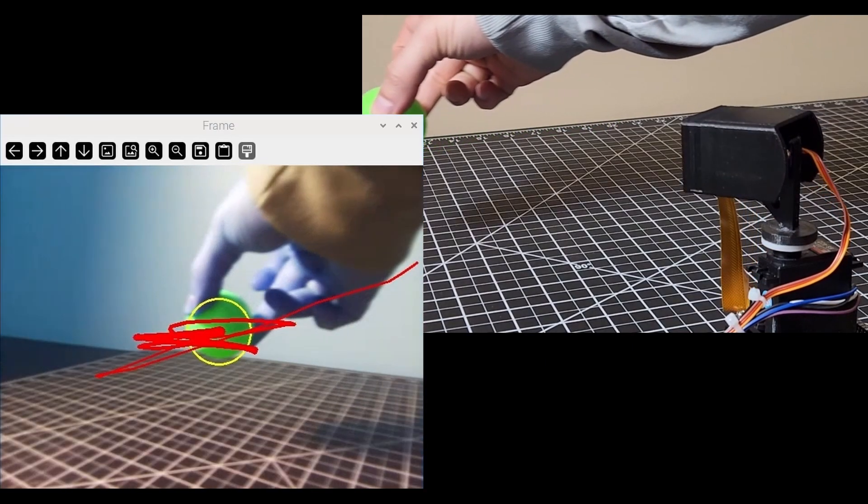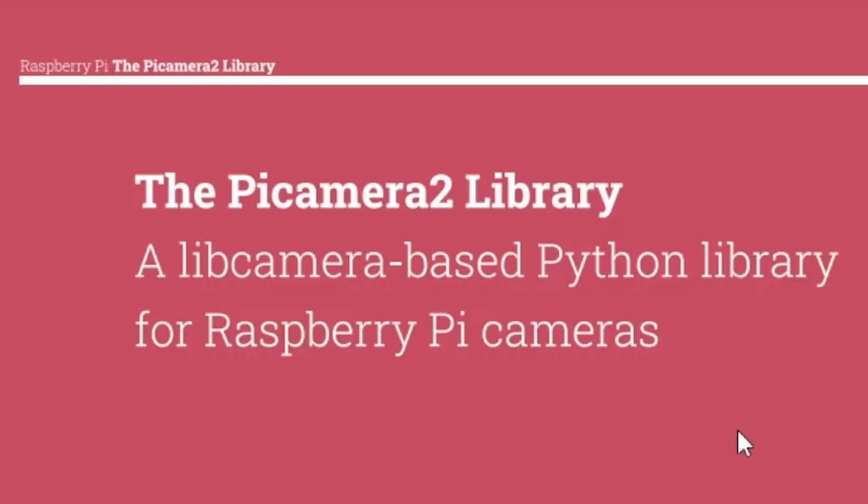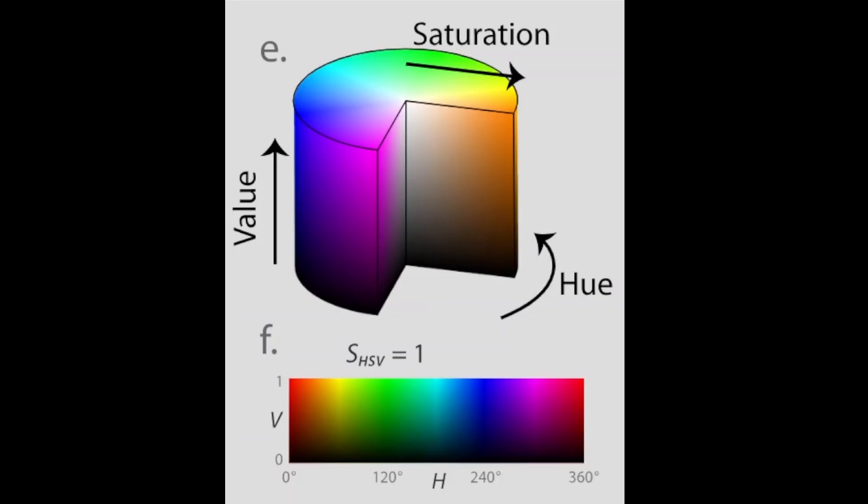Welcome to a new DIY Engineers video. In this video I'll go over the color configurations of the Raspberry Pi camera library called PiCamera2 and some basics on color spaces in general.